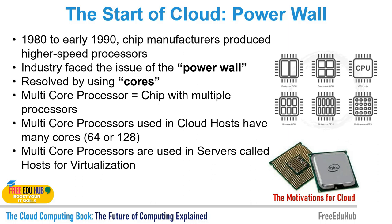Now let's understand how we evolved to cloud computing. In the 1980s and 90s, chip manufacturers produced processors with more functionality and higher speed than previous ones. Individual computers became more powerful while cost remained approximately the same. This encouraged individuals and organizations to expand computer use. When processing power became insufficient, computers could be upgraded to a newer, more powerful model — organizations ran services like worldwide web services on powerful computers called servers.